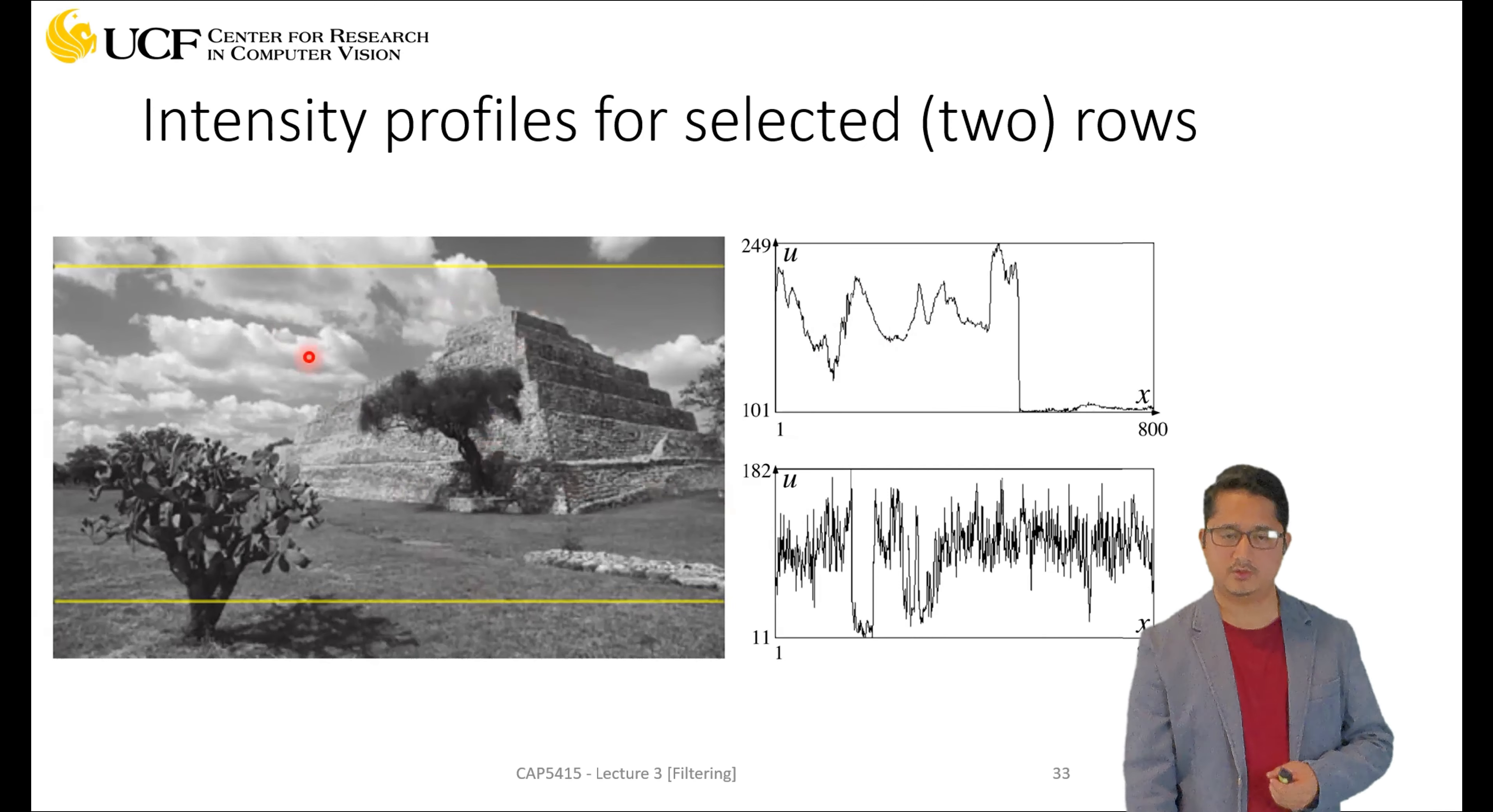Now if you do a similar kind of pixel analysis on the second yellow line on the bottom here, you will see that this curve was very smooth—it was not fluctuating a lot. But if you look at this intensity profile, it's actually fluctuating a lot.